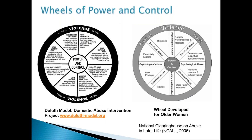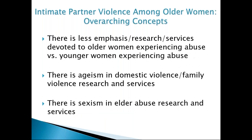Some of you might be familiar with these wheels of power and control. The one on the left shows how people obtain and maintain power and control in relationships using various methods. The wheel on the right was developed specifically for older women — it's a little bit simplified compared to the one on the left, which was developed primarily focused on abuse that younger women experience.